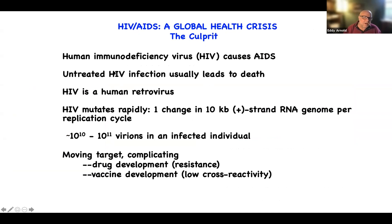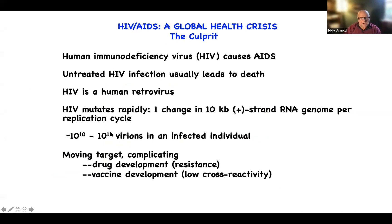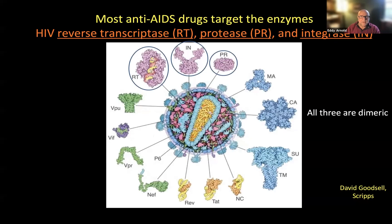The problem with HIV is that untreated infection usually leads to death. It's a human retrovirus. One of the problems is that there are about one change in the 10-kilobase RNA genome per replication cycle, and there are tens of billions of virus particles in an infected individual. This means it's a genetically moving target — a problem for drug development because of drug resistance and also for vaccine development. By now we know a fantastic amount about the molecular biology of HIV, the structural biology of HIV, and reverse transcriptase, integrase, and protease are the three major drug targets.